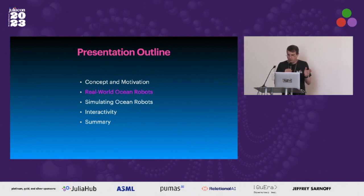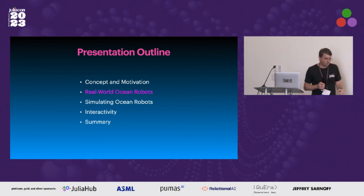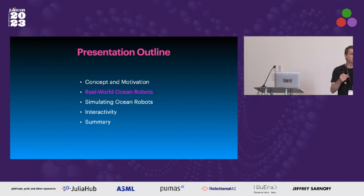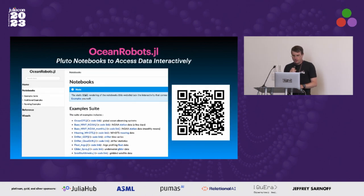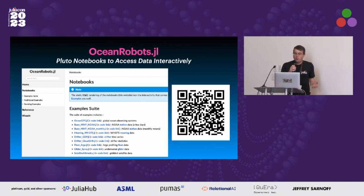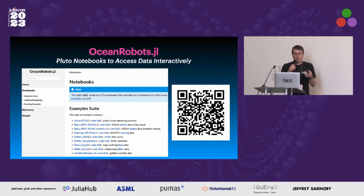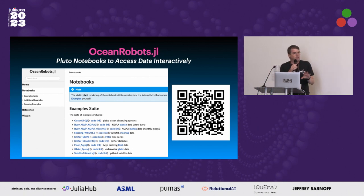So we're going to talk about ocean robots — real ones and simulated ones. I wrote a little package called OceanRobots.jl, partly to access the data and build this project forward. What you'll find in this package is a set of notebooks that access different kinds of datasets, creating a bridge between all of this data and Julia.